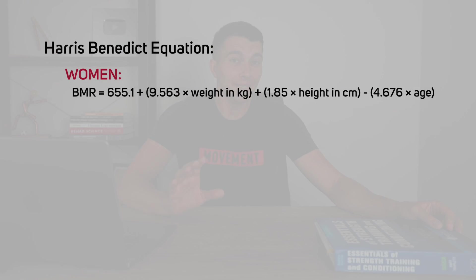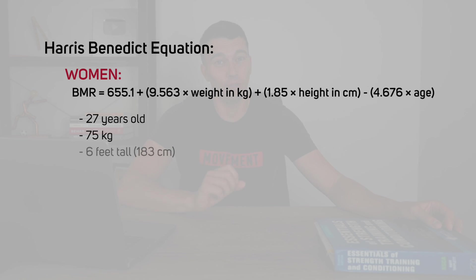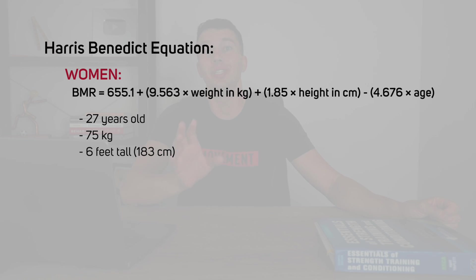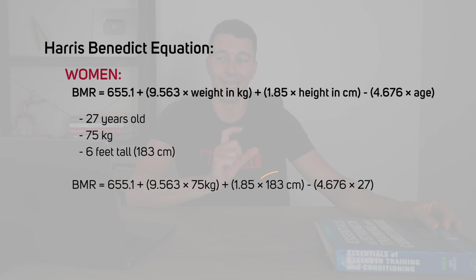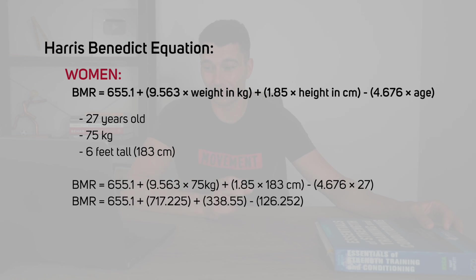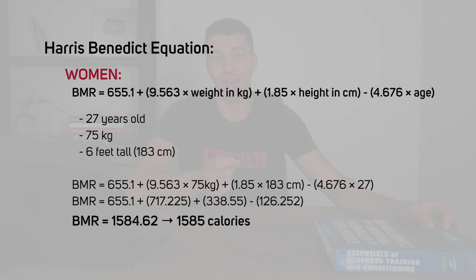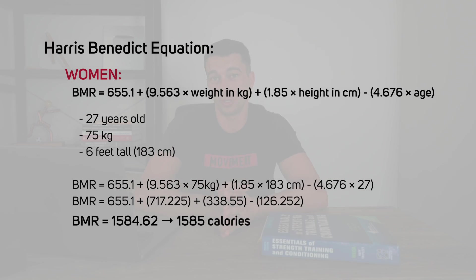Let's go through an example for the Harris-Benedict equation. Say we're working with a 27-year-old female athlete who is 75 kilograms and 183 centimeters tall. You would plug in 75 kilograms, 183 centimeters, and 27 for age, and come up with 1,585 calories for their basal metabolic rate.